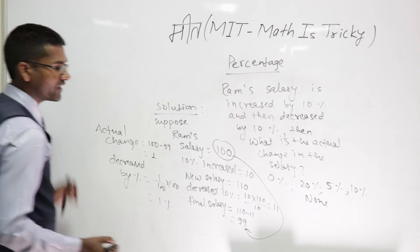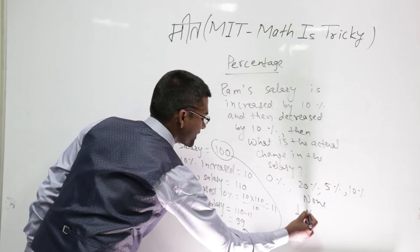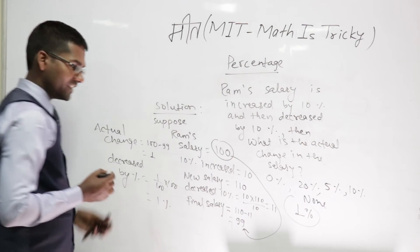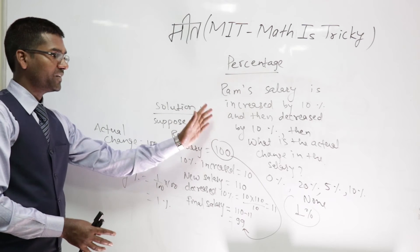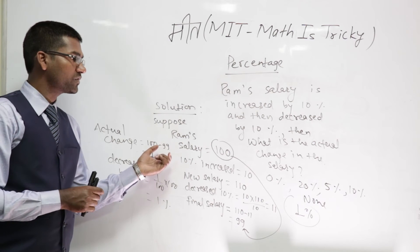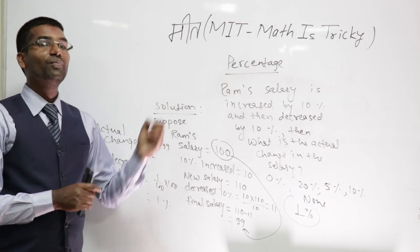So your answer is 1 percent. The correct answer is 1 percent. Now see, this much we have drawn to solve this. But what is the trick behind this to solve this type of problem within seconds?